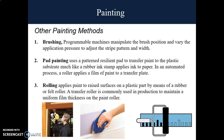Other painting methods include brushing, painting, and rolling. Brushing is most commonly used in automated stripe painting applications. It is a programmable machine that manipulates the brush position and varies the application pressure to adjust the stripe pattern and width. This image shows a roller transferring paint to the raised features on the molded part.